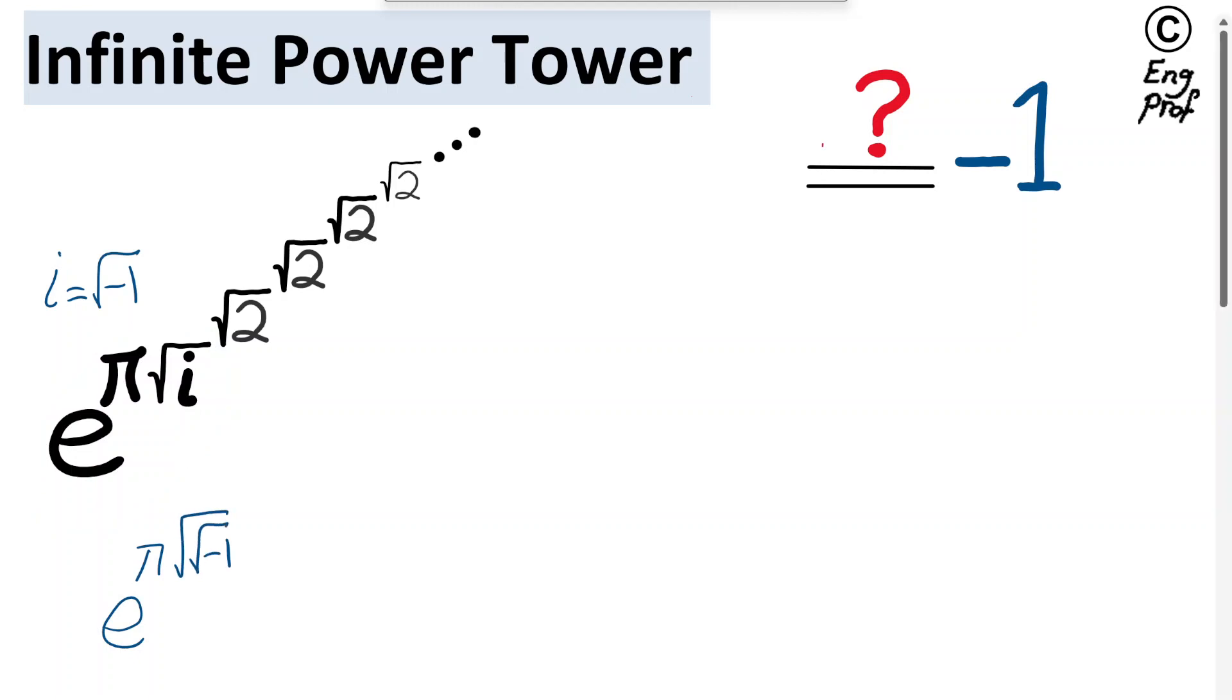For the square root of i, we have an infinite power tower, which is basically saying square root of 2, infinitely raised to itself, or basically tetrated to infinity. This is referred to as tetration, or infinite power tower, or hyper 4 operation.